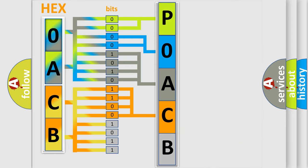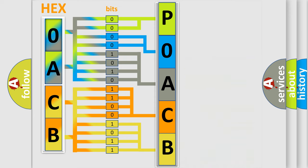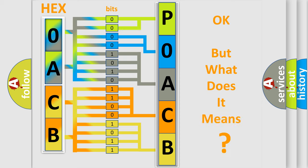A single byte conceals 256 possible combinations. We now know in what way the diagnostic tool translates the received information into a more comprehensible format. The number itself does not make sense to us if we cannot assign information about what it actually expresses.